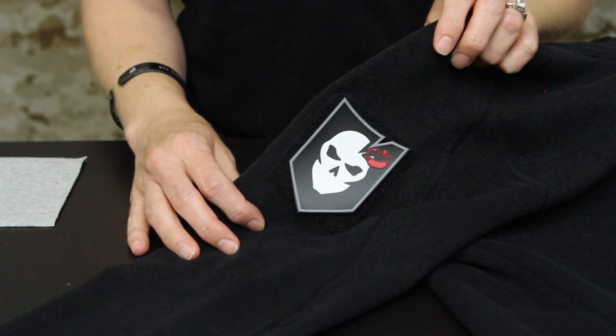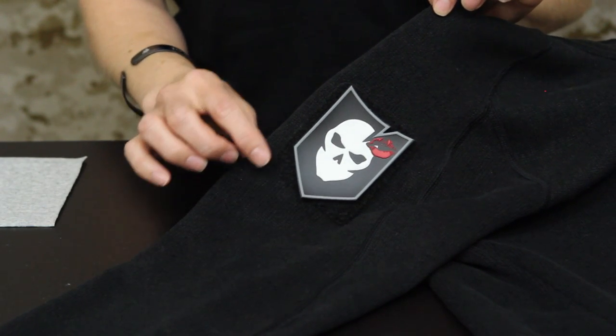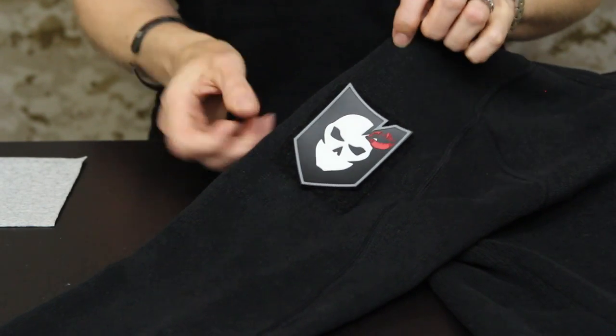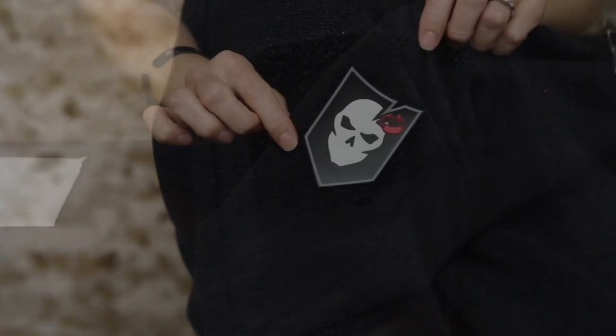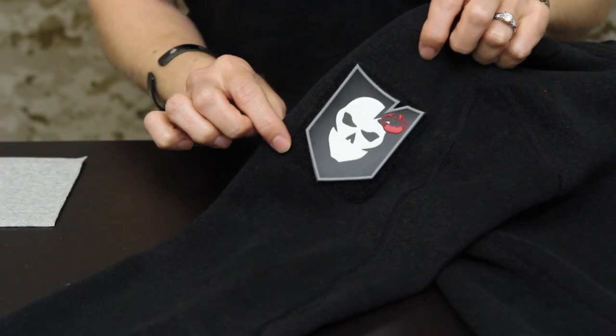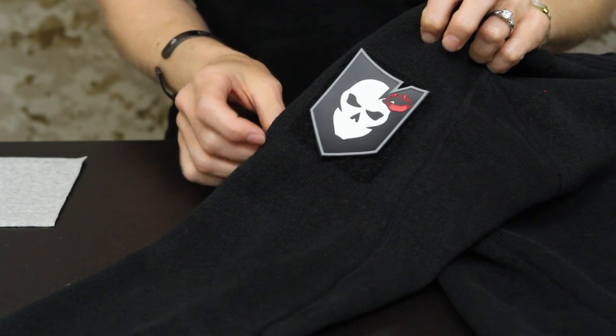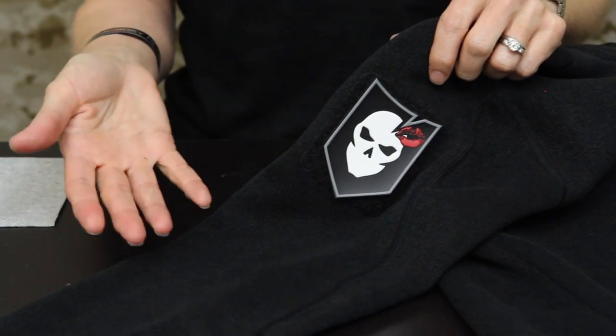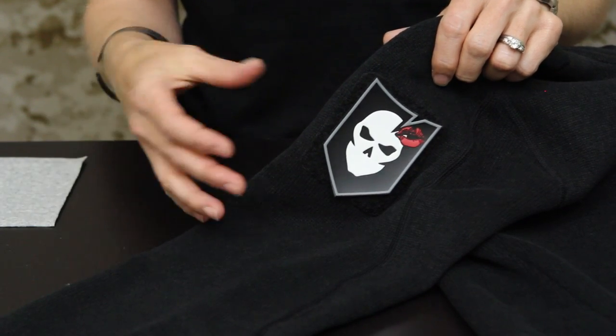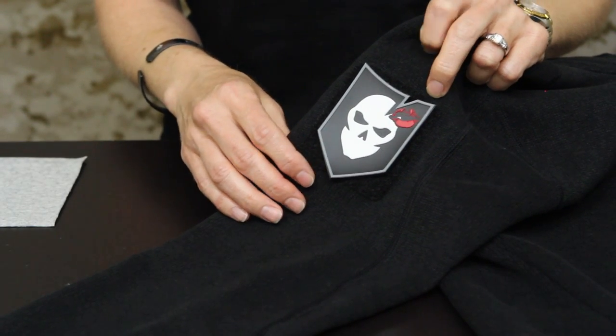I also wanted to show you an example of a sweater that I added some loop to the sleeve. A lot of women's garments don't come already with loop sewn on like some of the men's garments do. So I've always wanted to be able to wear a patch whenever we're either at SHOT Show or at another event and be able to change that out.